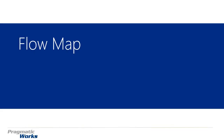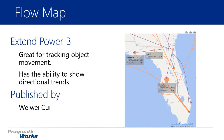Hi, welcome back to the Power BI Custom Visuals course, and in this module we'll be looking at the flow map. The flow map is really great for tracking object movement. As you can see in the screenshot on the right-hand side, we're seeing movement between multiple counties within the state of Florida. We'll be looking at a fairly similar example in a few moments, looking at the migration of individuals from different counties within Florida. It has the ability to show directional trends really well.